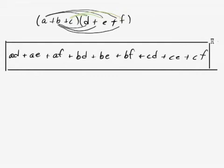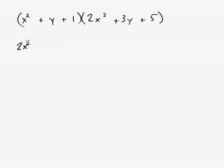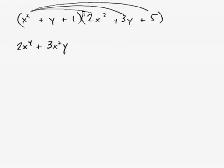So let's see. I think we have time for one more problem. Let's try this one out. How about something like X squared plus Y plus 1 times 2X squared plus 3Y plus 5. First term is going to be X squared times 2X squared is 2X to the fourth. Next one is going to be plus 3X squared Y. And the last one's going to be plus 5X squared.